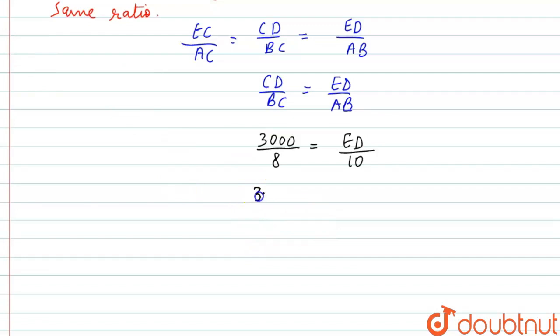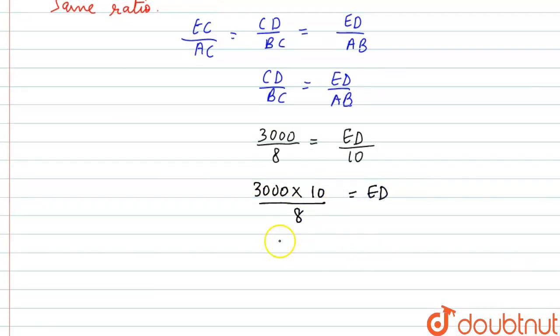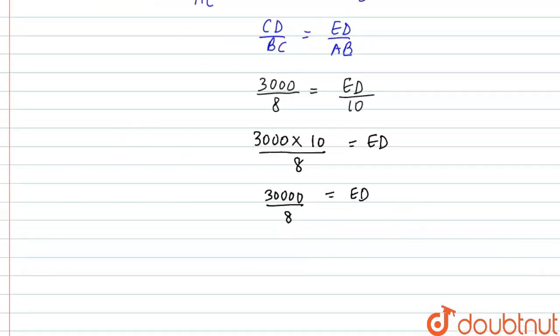This will be 3000 into 10 by 8 equal to ED. 3000 into 10 is 30,000 by 8 equal to ED. Upon division we will get this value as 3750 centimeters is equal to ED.